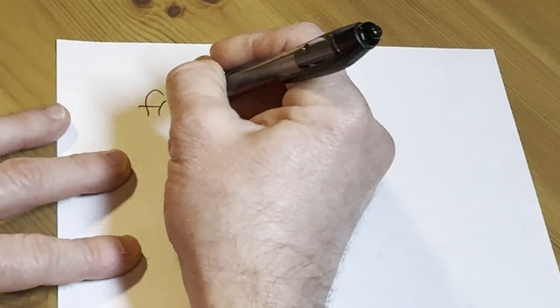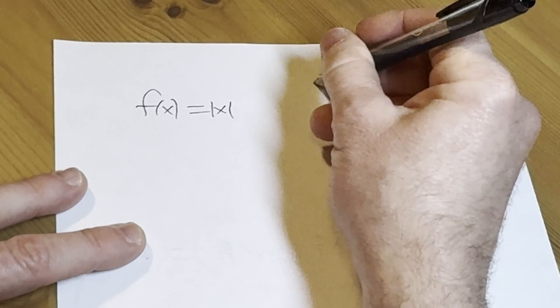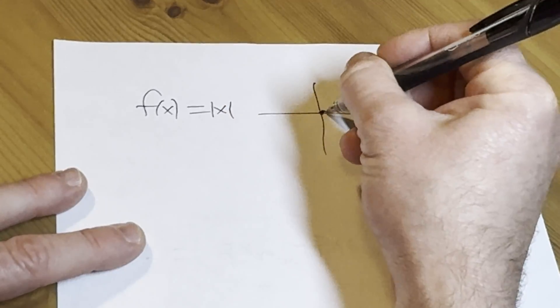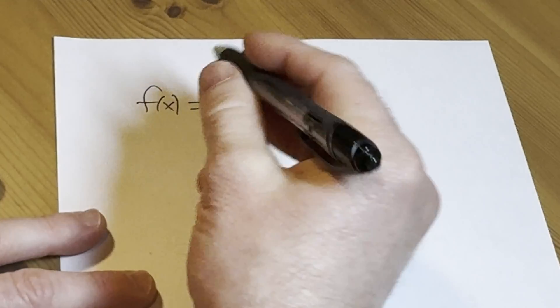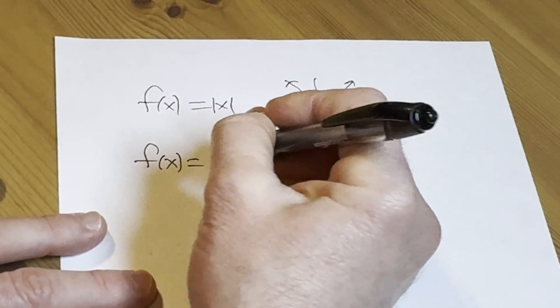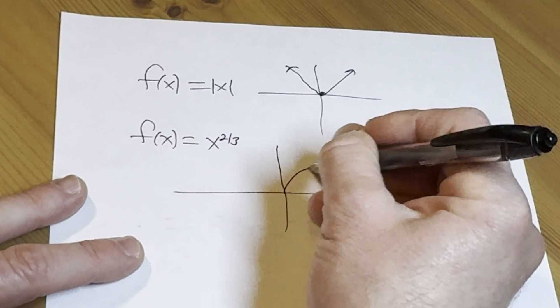So we saw this one. We saw the absolute value function. We saw that failed to be differentiable because you had that sharp edge. You have that V, right? Another one though, is x to the two thirds. And this one looks like that. It's like a bird. You know what that's called?